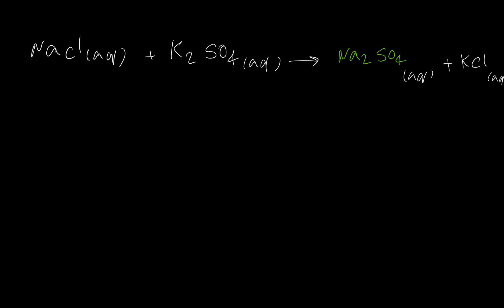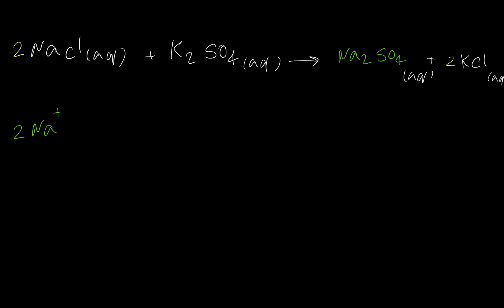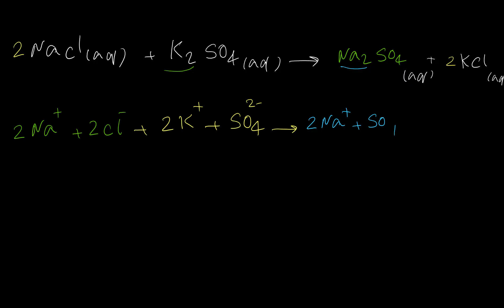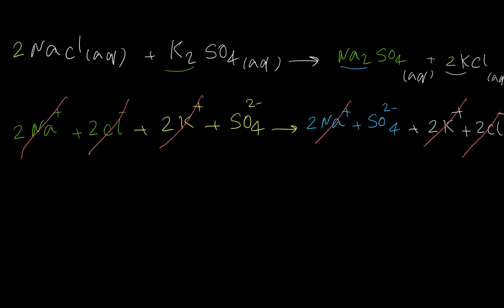For the next step we need to make sure the reaction is balanced. We have two potassium on the left and one on the right, so I put a coefficient of two for KCl. On the right side we have two sodium and only one on the left, so I add a coefficient of two for sodium chloride. For the ionic equation: two sodium and two chloride, two potassium and one sulfate on the left; two sodium, one sulfate, two potassium, and two chloride on the right. Since there is no solid product, all products are in ionic form. Looking at this equation, we can see that all of these ions are spectators.